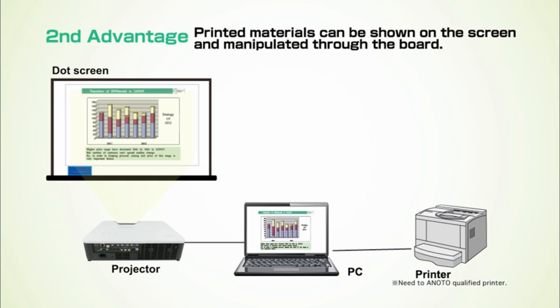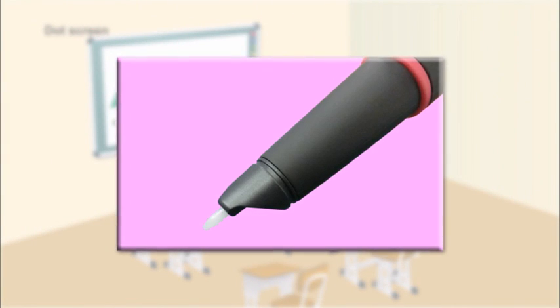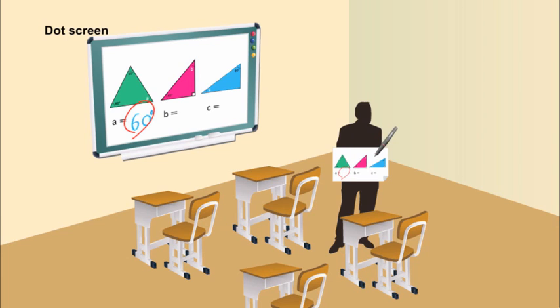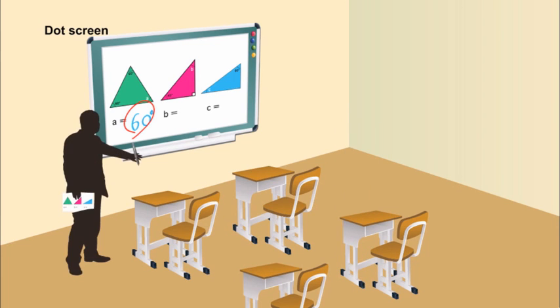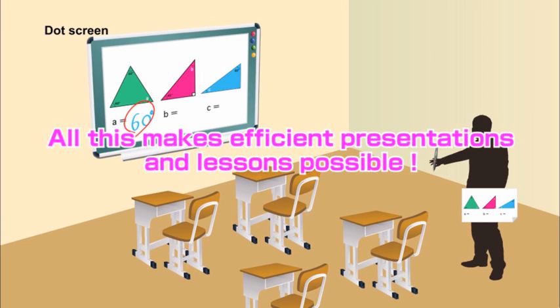Second advantage. You can write on printed paper to operate the projector and write on the screen. When you write on paper using a ballpoint pen-style tip, the writing is displayed on the screen at the same time. Since this allows you to walk around freely in the room, the lesson or presentation can be handled more efficiently.